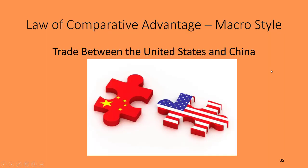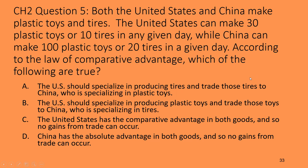Now let's talk about trade between two countries: the United States and China. Here's the type of question you might see on a quiz or exam. Both countries make plastic toys and tires. The U.S. can make 30 plastic toys or 10 tires per day, while China can make 100 plastic toys or 20 tires per day. According to the law of comparative advantage, which of the following is true? Feel free to pause the video and work through it yourself before we go through it together.